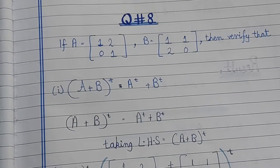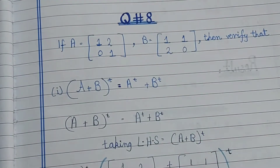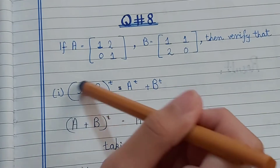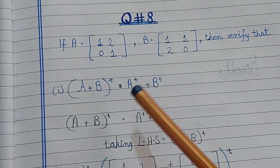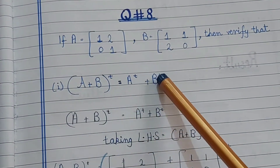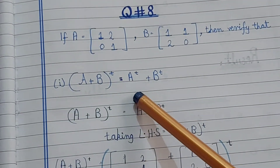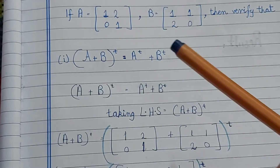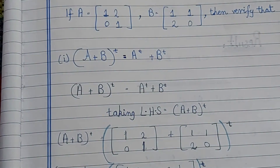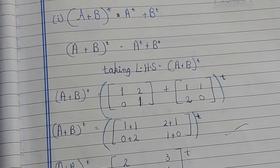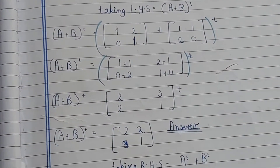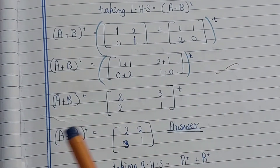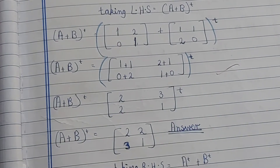In part 1, the right-hand side is A transpose plus B transpose. When I solve the right-hand side, I add the two transposed matrices together. The answer I get from the right-hand side is [2,2;3,1].